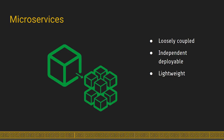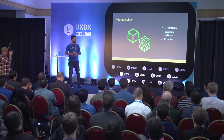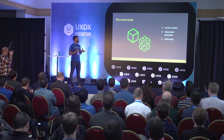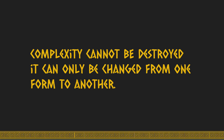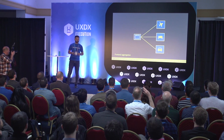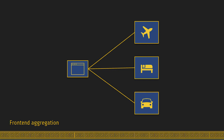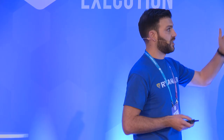The monolithic architecture started to be destroyed or shifted into microservices back in 2011. What this means is that the back-end started using a collection of different services — loosely coupled and independently deployable. Our application became a suite of different services. But if we rephrase the law of conservation of energy: complexity cannot be destroyed, it can only be changed from one form to another. What this meant is that the aggregation or communication between all these microservices was now done in the front-end.